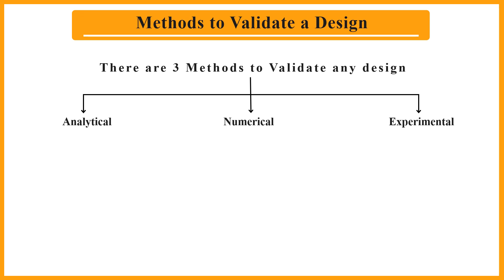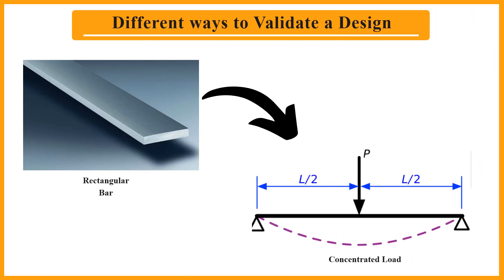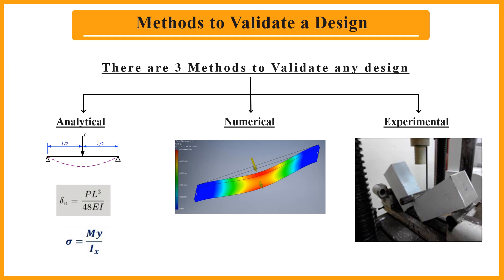There are three methods of Design Validation: analytical, numerical, and experimental. The analytical method uses mathematical formulas to calculate the behavior of a design. For instance, if we need to calculate the stress in a rectangular beam, we could use standard formulas from mechanics of machines. While it is highly accurate, it can only handle simple cases and is very time consuming.